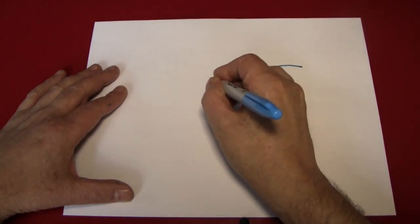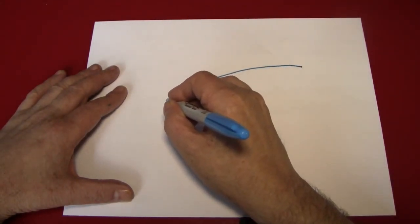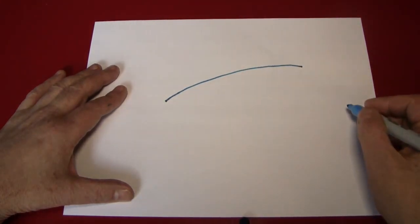We are going to put the nose of the rocket ship here and draw a large curved line most of the way across the page.